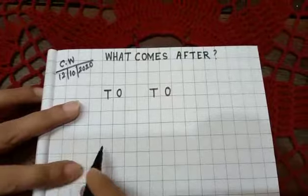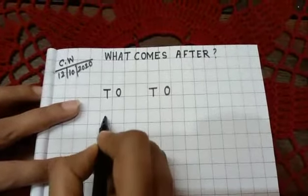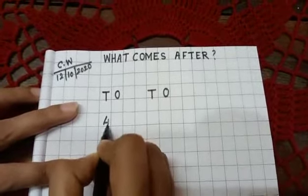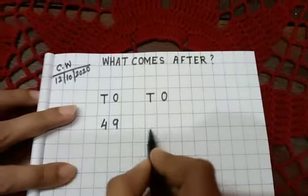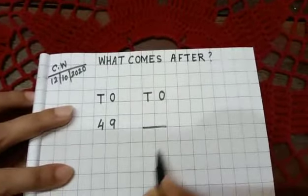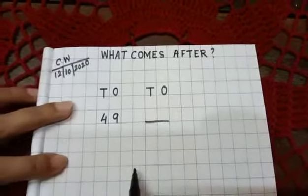Then again leave one box and write the numbers. Six, four, nine, forty-nine, dash. Okay write by yourself.